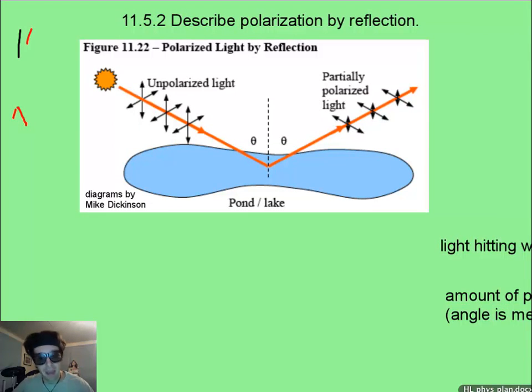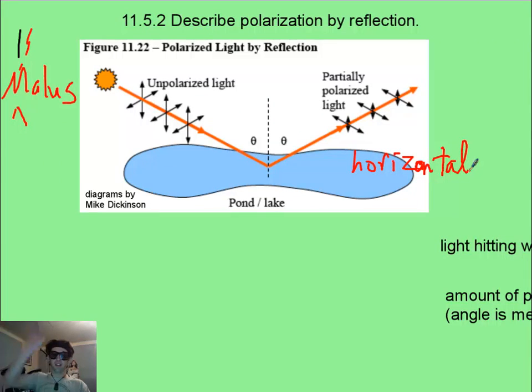Now a guy named Malus, M-A-L-U-S, is given credit with discovering that when light hits something like water that's partially transparent, when it bounces off, it's going to be somewhat polarized. And what happens is, it's going to be polarized mainly horizontally, because the surface of the lake is horizontal. The horizontally polarized light bounces off quite well. The vertically polarized light does not bounce off quite as much. And so reflected light from things like a lake surface will be horizontally polarized.